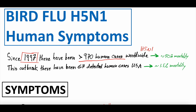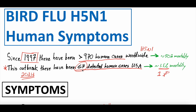This outbreak, though — particularly the human cases that have started really since 2024 — has seen about 67 detected human cases in the USA. The USA is seeing a lot more human cases than internationally. Interestingly, the mortality has only been 1.5%. Actually, only one person of the 67 in the USA that got bird flu passed away. There hasn't even been that much severe disease. Obviously this is a good thing, but there's a huge discordance between 50% and 1.5%, so something's different now.